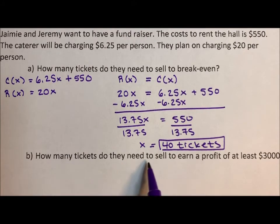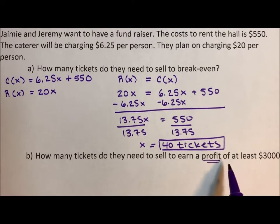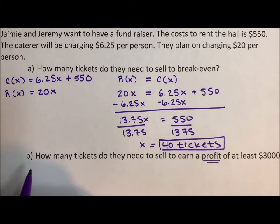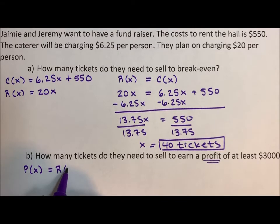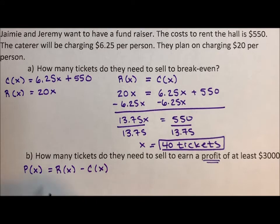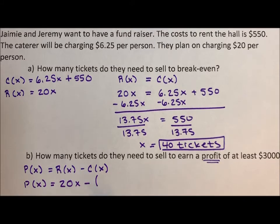How many tickets do they need to sell to earn a profit of at least $3,000? By profit, that means $3,000 is going to the fundraiser. Profit is the revenue minus the cost. So profit is 20x minus, and we're going to put all of cost in parentheses, 6.25x plus 550.